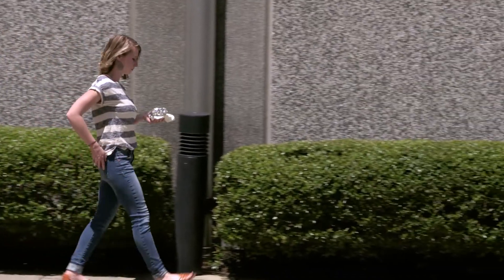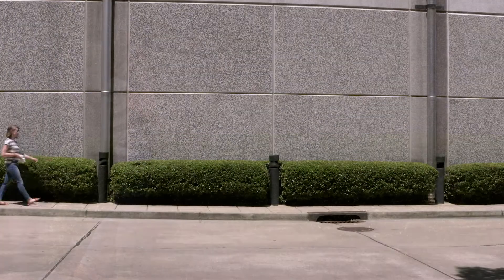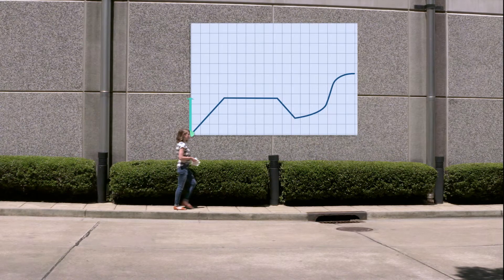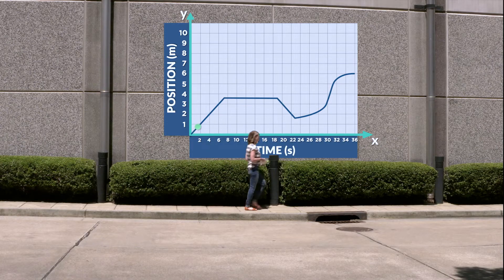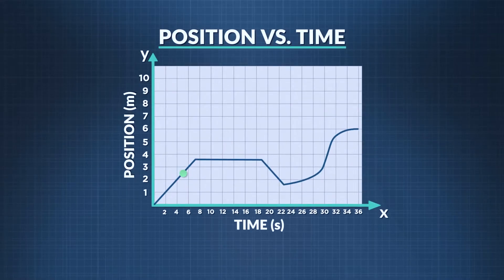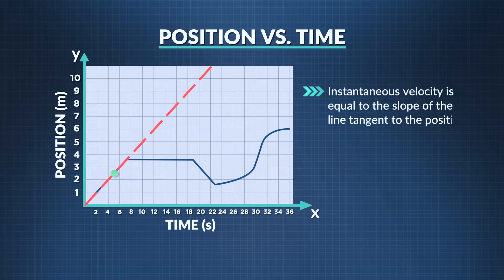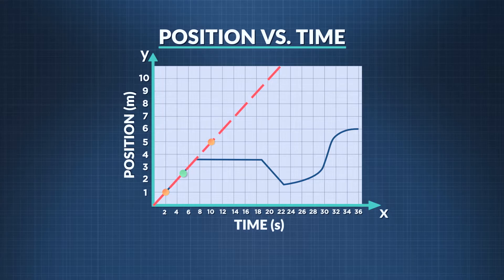We want to graph Summer's position at a certain moment in time — let's say five seconds, which happens to be when her phone rings. We'll do it on a position versus time graph. The vertical axis shows her position in meters. The horizontal axis shows time in seconds. First we find five seconds on the time axis. Then we draw a tangent line, which is a straight line that touches the graph and runs infinitely far from that point in both directions. To find the instantaneous velocity, we need to find the slope of this line. We pick two points on the tangent line and label the first point's coordinates x1 and y1, and the second point's coordinates x2 and y2.